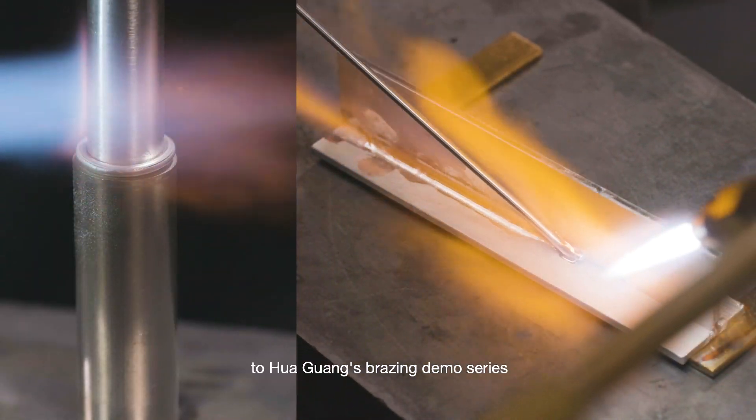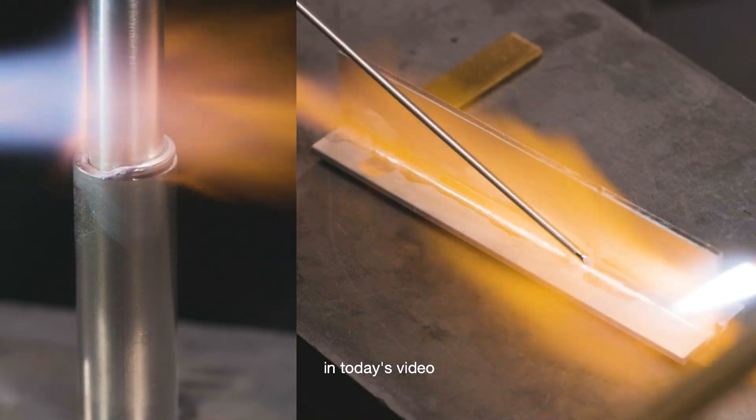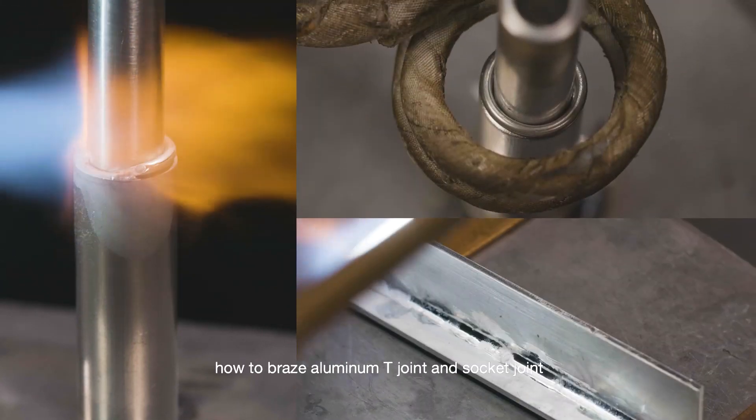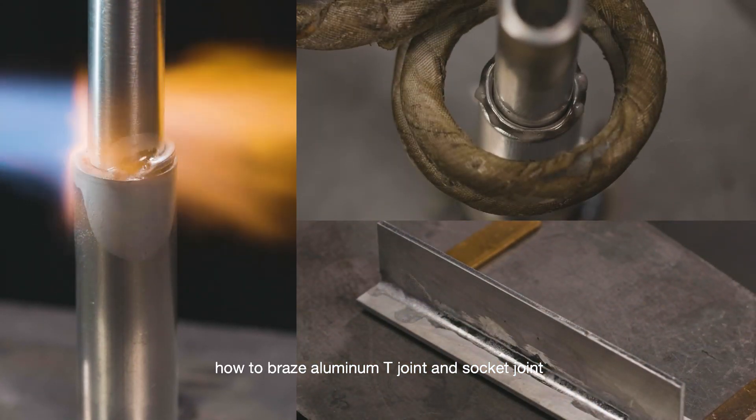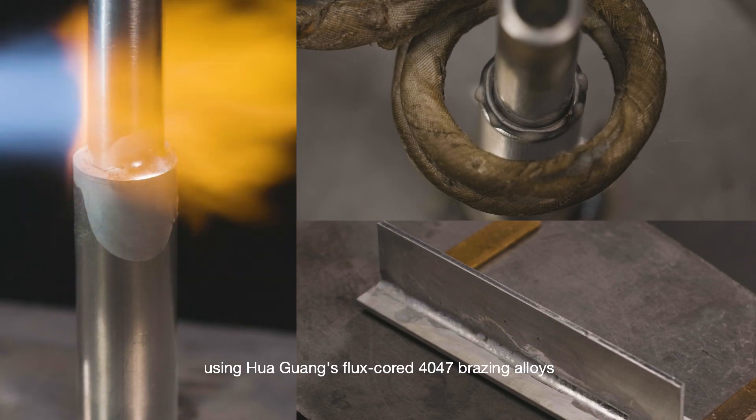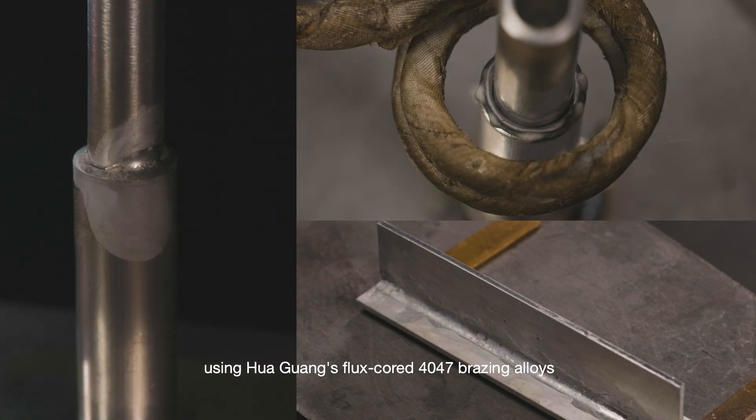Welcome back to Hua Guang's brazing demo series. In today's video, we will show you how to braze aluminum T-joint and socket joint using Hua Guang's flux-cored 4047 brazing alloys.